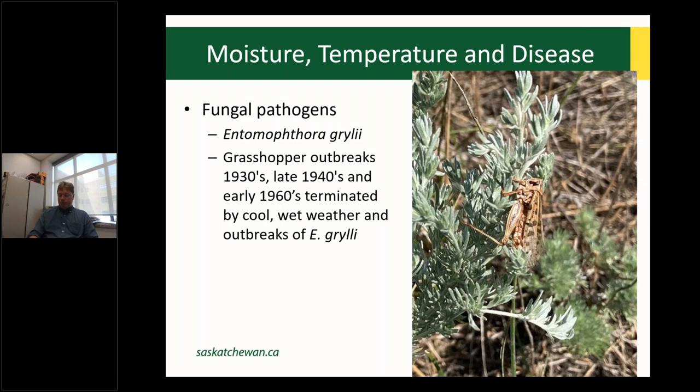There have been outbreaks stemmed by epizootics of Entomophthora — in the late 30s, late 40s, and early 60s, major outbreaks were terminated by cool, wet weather and subsequent outbreaks of Entomophthora. Really, what's going to stem our current trend of large grasshopper populations is cool, wet weather. We are left to try to control these animals, but functionally, it's the weather that's going to limit their impact in broad areas.